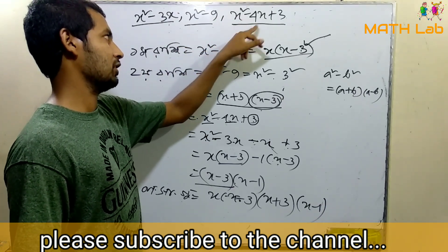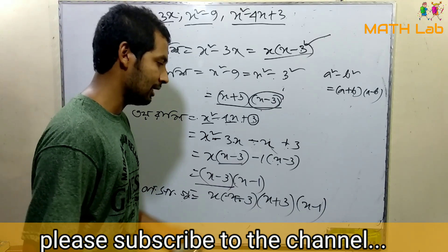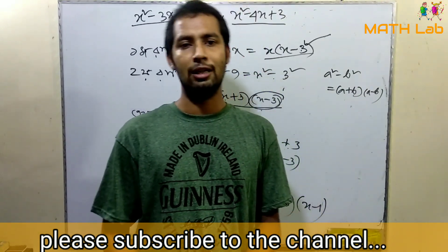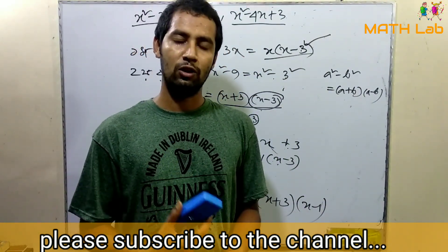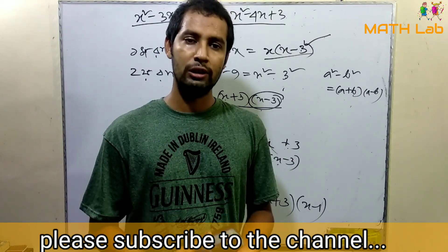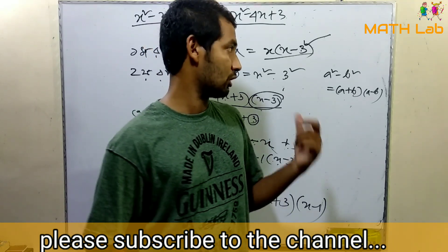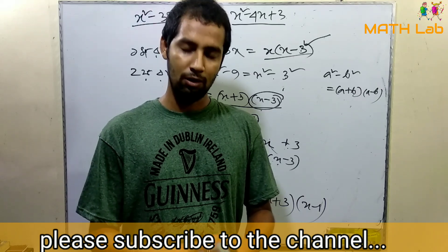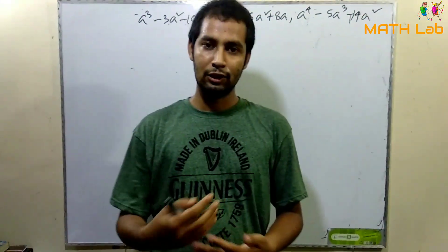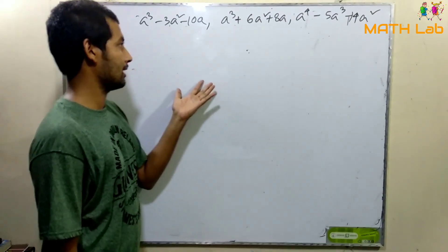x squared minus 4x plus 3 is equal to 0. We know that the solution is equal to 0. We will have the solution. The solution is equal to 0. Thus, once we have got the same, this one is equal to 0.